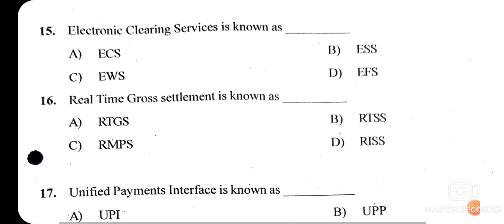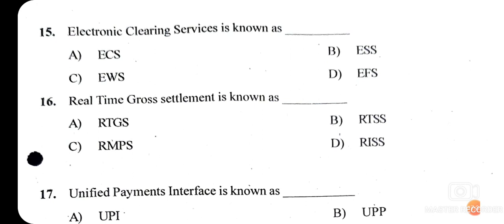Question fifteen: Electronic Clearing Service is known as what? We need to find the short form of Electronic Clearing Service. The right answer is ECS. ECS is a mode of electronic fund transfer from one bank account to another bank account.